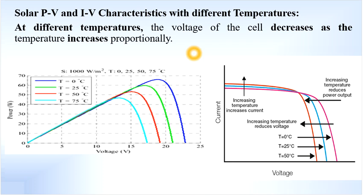Although the current increases with respect to temperature, the voltage of the cell decreases as the temperature increases — so the voltage relationship with temperature is opposite. In the power versus voltage plot, for different temperatures represented by different colors, as the temperature increases from dark blue to light blue, the curve shifts towards the left side, meaning voltage is getting reduced — lower voltage values as temperature increases.